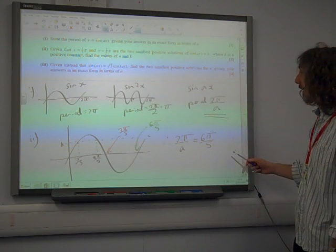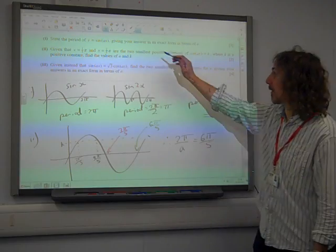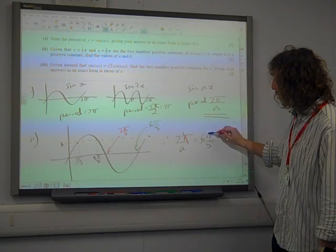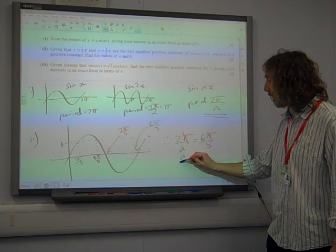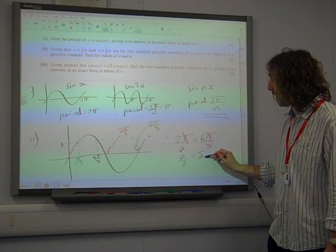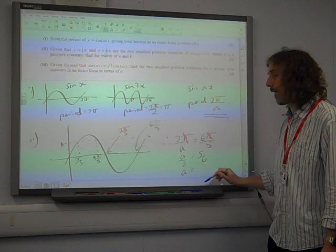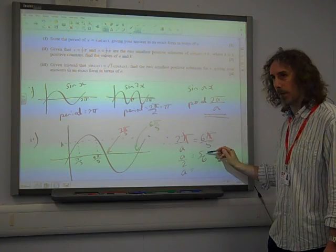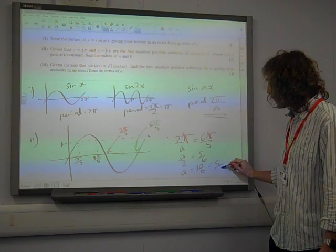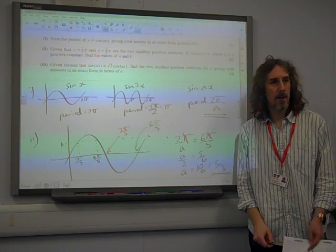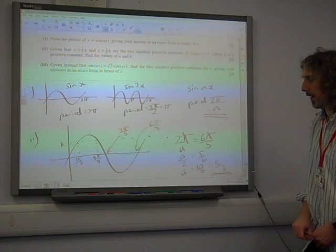And so, if we rearrange this, we're trying to find a. We can cancel π out on both sides of this little expression here, and take the reciprocal of both sides, so a over 2 is 5/6. So a must be 10/6 if I multiply both sides by 2, which is 5/3. So a is 5/3 in order to have produced that.